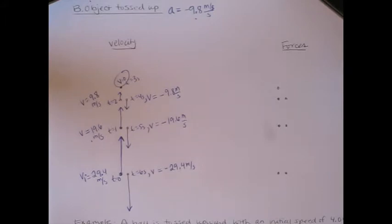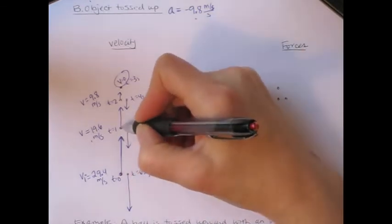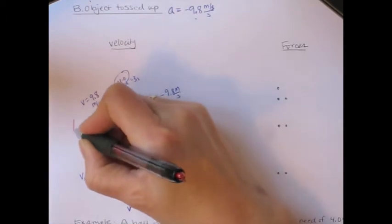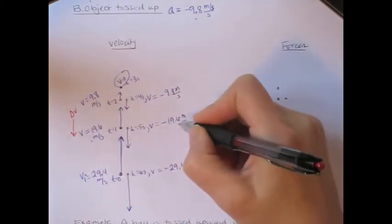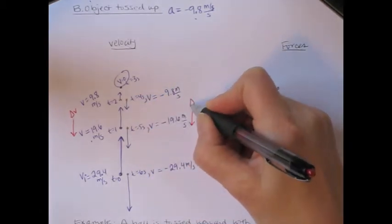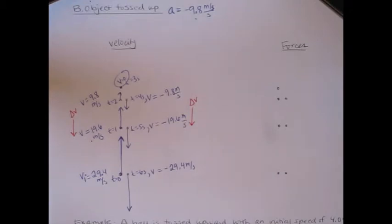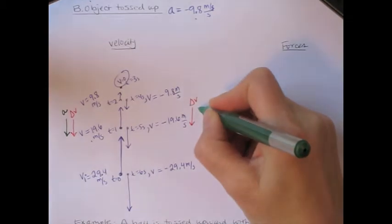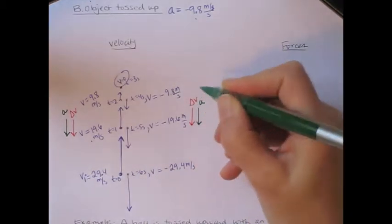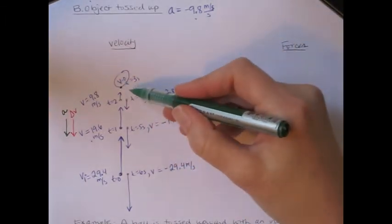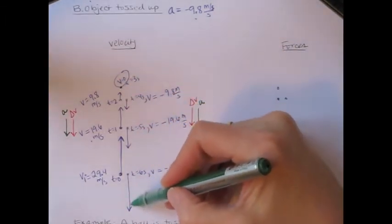Let's talk about the direction of the change in velocity. To get from one velocity vector to the next, you would need to add a downward arrow, so the change in velocity is downward. This is true both when going from one upward velocity to a smaller one and on the way down. That tells us the direction of the acceleration — acceleration is in the same direction as the change in velocity. So we have a negative acceleration both when slowing down in the positive direction and when speeding up in the negative direction.